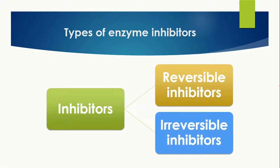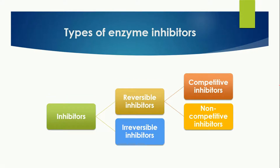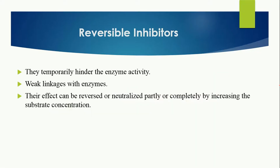There are two types of enzyme inhibitors: reversible inhibitors and irreversible inhibitors. The reversible inhibitors are further divided into competitive inhibitors and non-competitive inhibitors. Let's study each of these inhibitor types one by one.